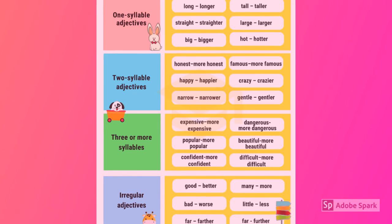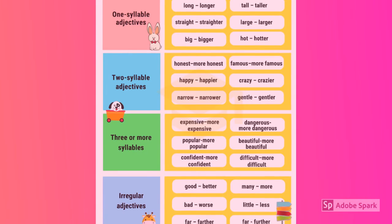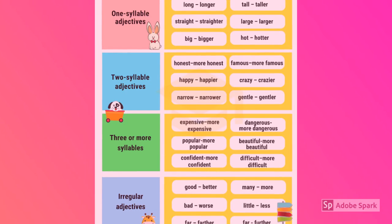For three or more syllables, as you can see here, we typically add more before the adjective, like more expensive. But we also have a bunch of irregular adjectives that completely change, that we need to memorize in order to be able to use. For example, good becomes better, or bad becomes worse.